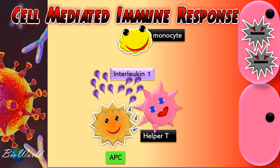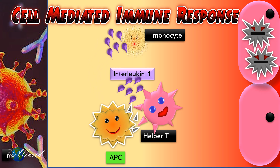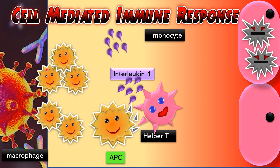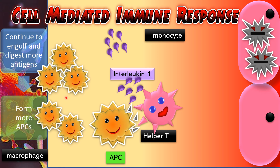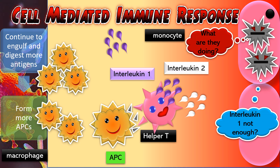Interleukin-1 has two roles. The first role is where interleukin-1 will stimulate the monocytes to divide and differentiate into multiple copies of macrophage. This macrophage will circulate throughout the body to engulf and digest pathogens and produce many APCs. The second role of interleukin-1 is to stimulate the helper T cells to secrete interleukin-2.